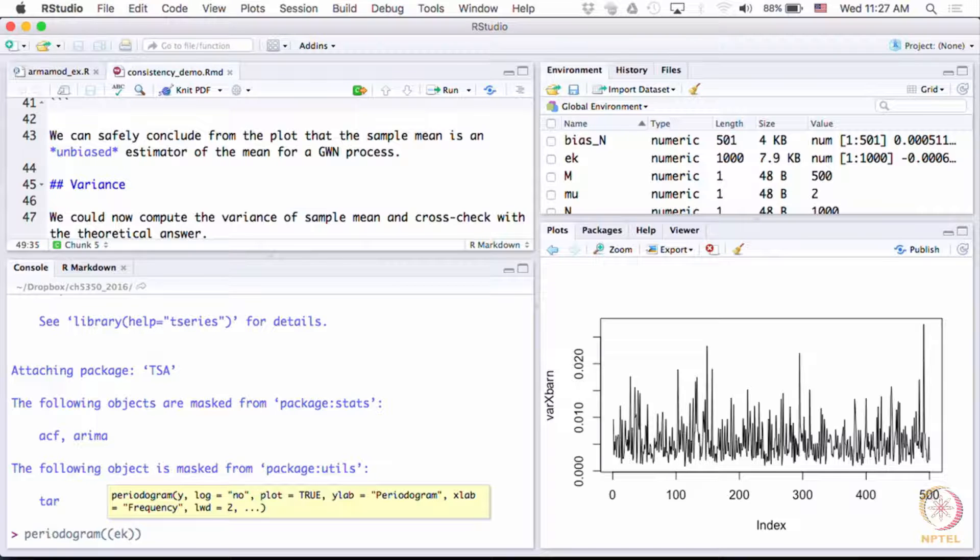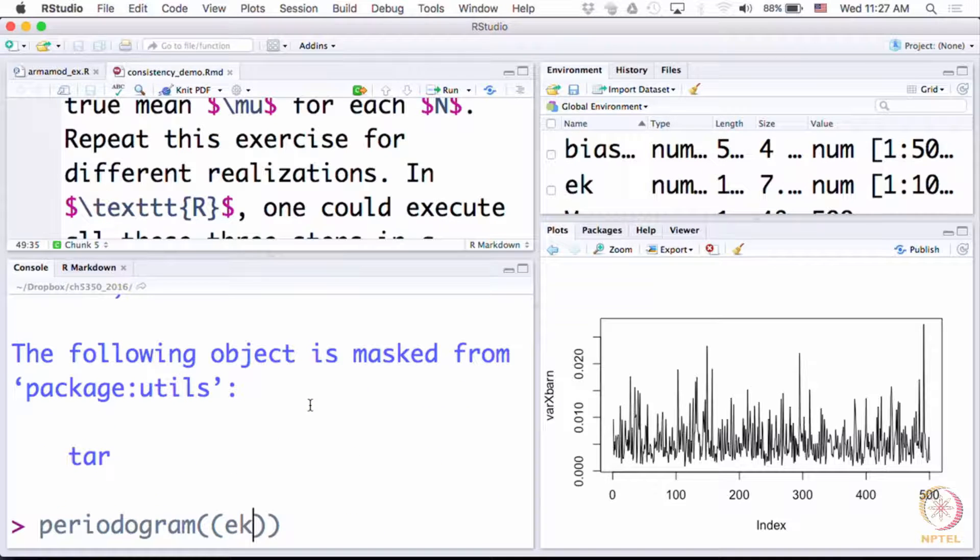What should we expect to see? What is the theoretical spectral density? Periodogram gives you empirical spectral density. So what do we expect to see? What is theoretical spectral density of a white noise? Flat, correct?